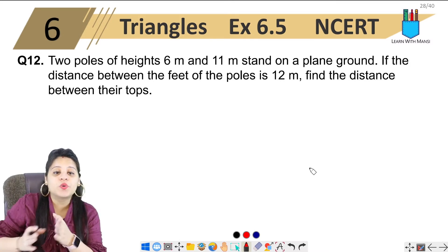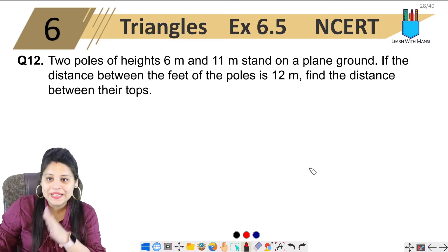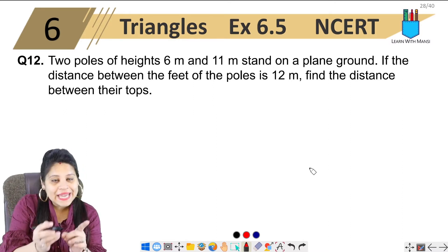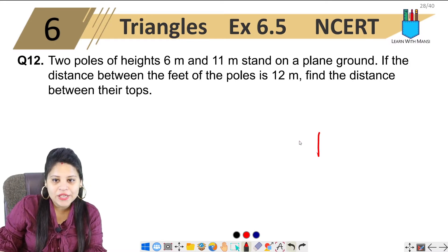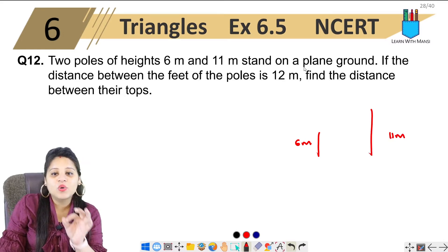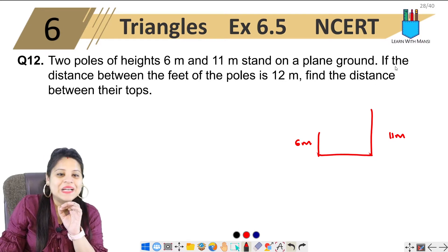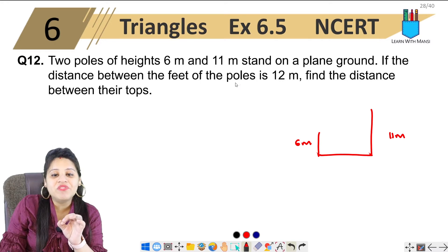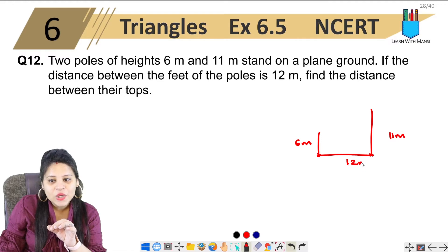The question says two poles of height 6 meters and 11 meters stand on a plain ground. Now there are two poles. One's height is 6 meters, the other pole is 11 meters. Now they stand on a plain ground. If the distance between the feet of the poles is 12 meters.